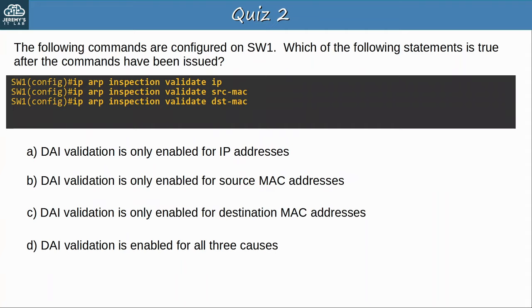Question 2: The following commands are configured on SW1 — which of the following statements is true? The answer is C — DAI validation is only enabled for destination MAC addresses. When configuring these optional DAI validation checks, to configure multiple checks you should configure them all in a single command. Otherwise, only the last command entered will take effect.